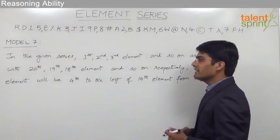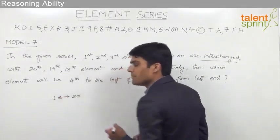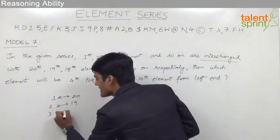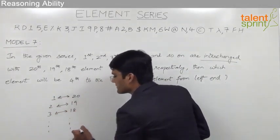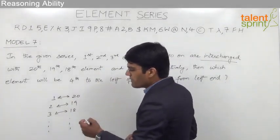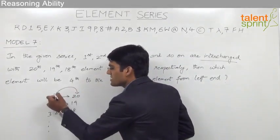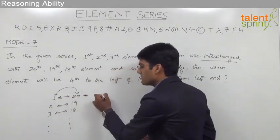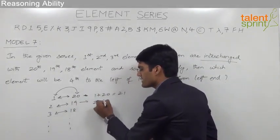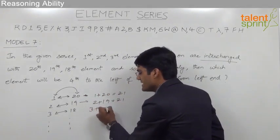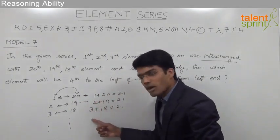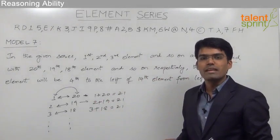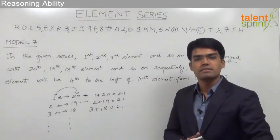If we observe the pattern, the 1st element is interchanged with the 20th element, the 2nd element is interchanged with the 19th element, and the 3rd element is interchanged with the 18th element and so on. The key point we can make out is that the sum of the 2 positions is always 21 — 1 plus 20 is 21, 2 plus 19 is 21, 3 plus 18 is 21 — as we increase one position and decrease the other by 1. So the sum of any two interchanged positions must be 21.